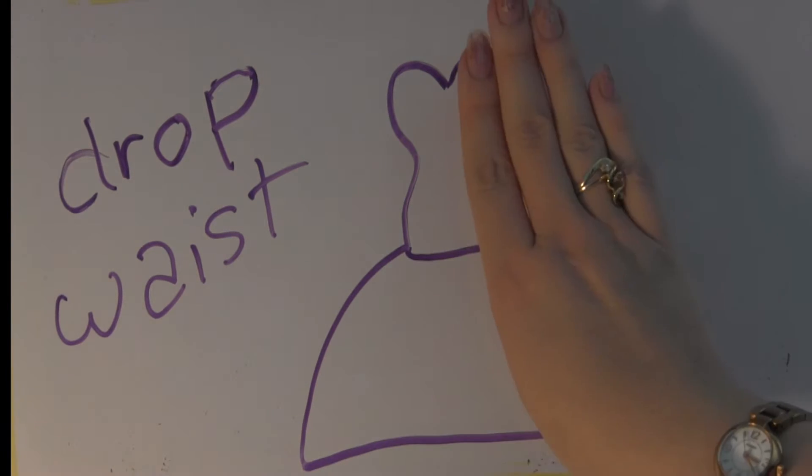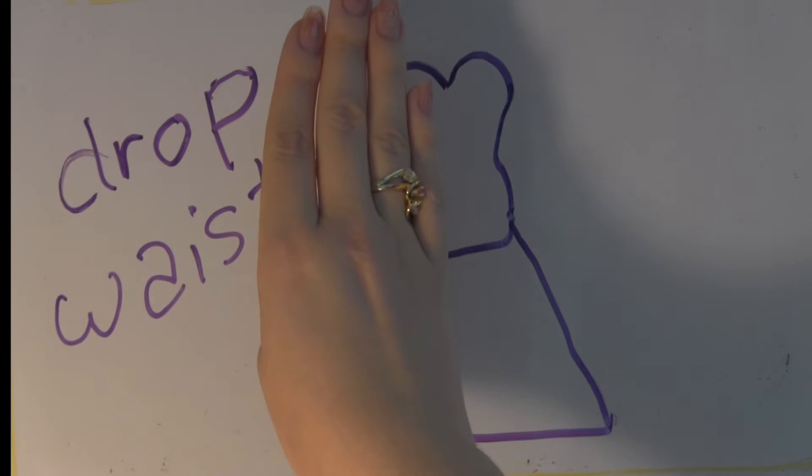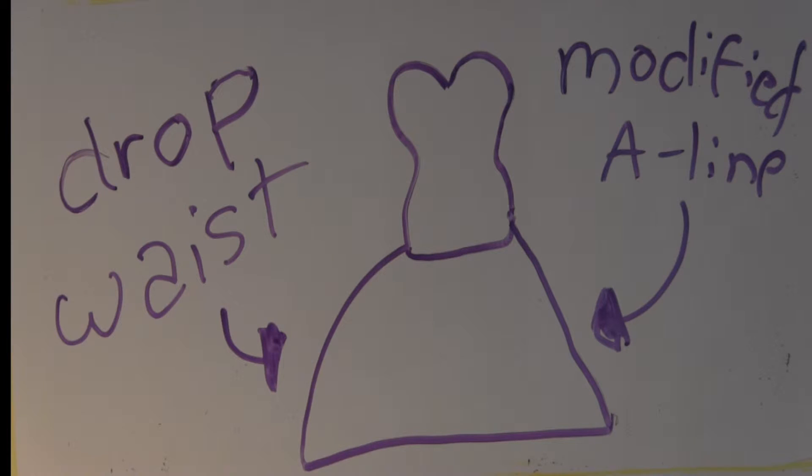So, as you can see on the left, that is the drop waist ball gown. There's the added drama of a full skirt, but on the right, which is the modified A-line, it's just a little more subtle. Drop waist and modified A-lines are perfect for brides who want to show off their curves, and it can also make the torso appear longer.